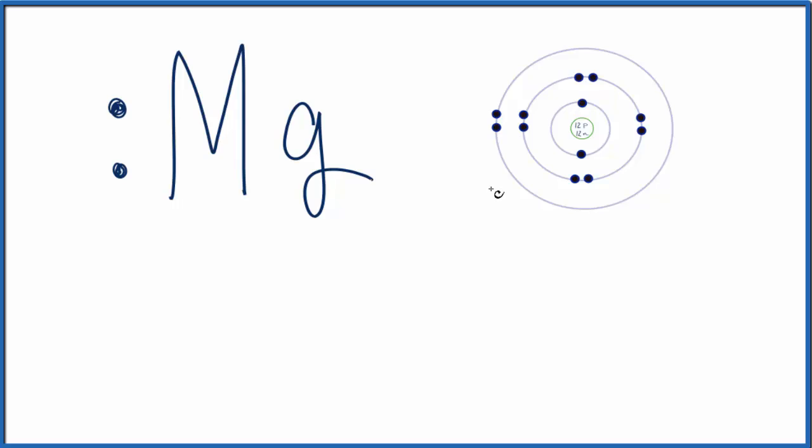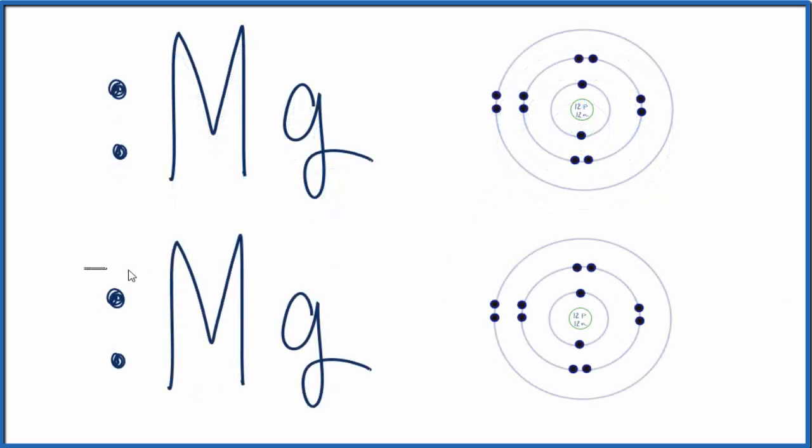Let's draw the Lewis structure for Mg2+. To do that, we'll get rid of these 2 valence electrons, which are represented here. So those are gone,